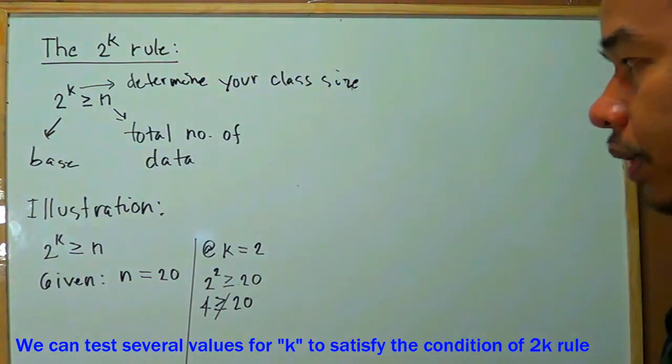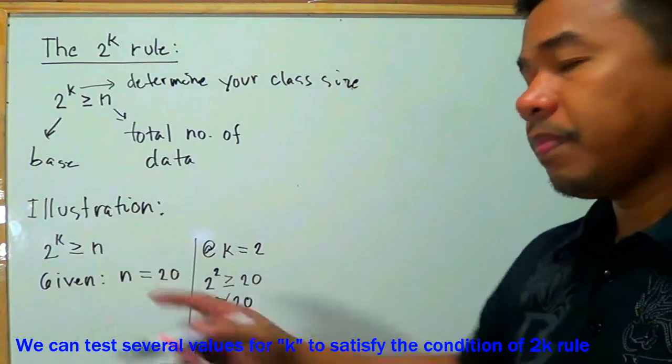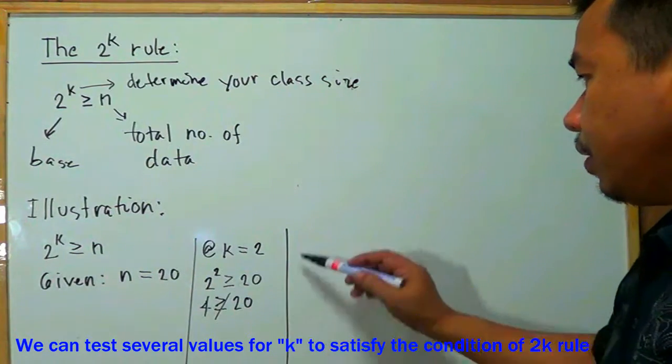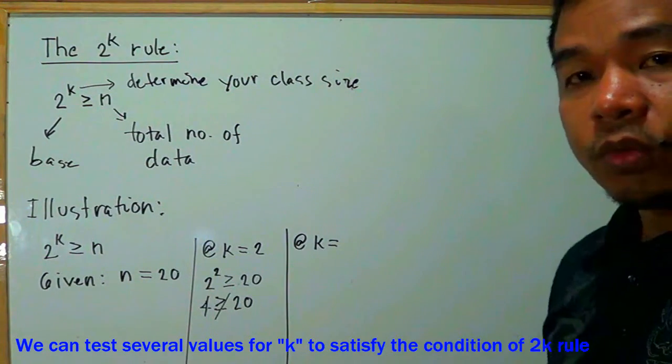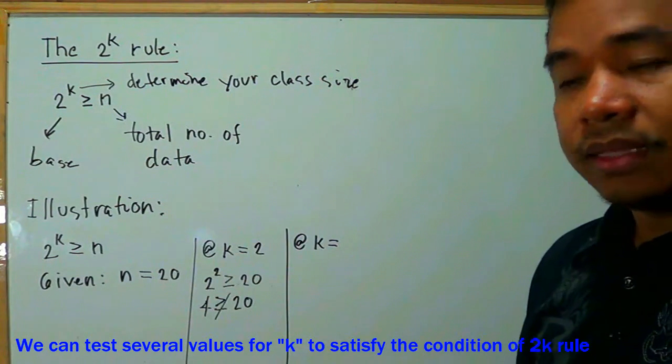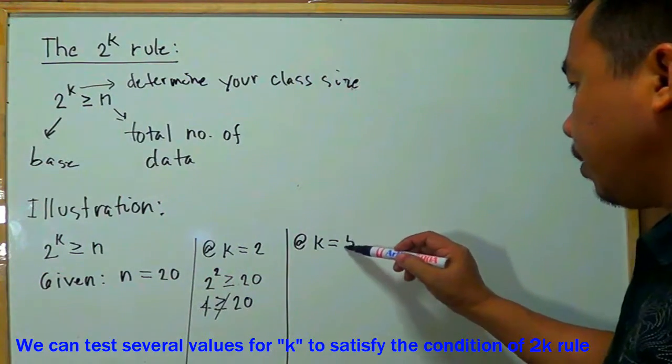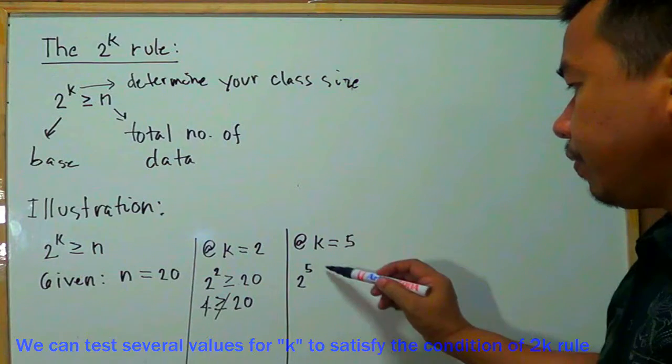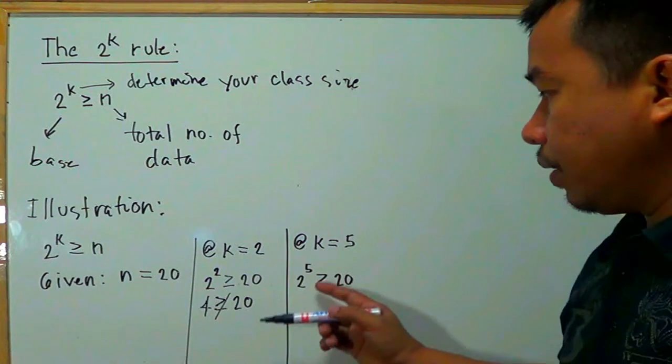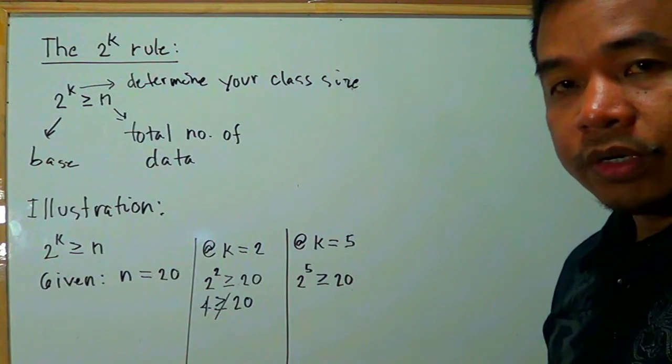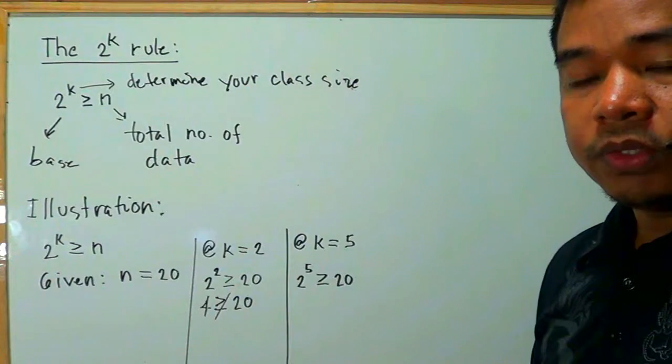Let's think of a number that when applying to this condition satisfies that general condition. Let's check when k is equal to, when our k is equal to 4, 2 raised to 4 is 16. Still cannot satisfy that condition. How about 5? Let's say k is 5, so this is 2 raised to 5. This is greater than or equal to 20. When base 2 is multiplied 5 times by itself, 2 times 2 is 4, times 2 is 8, times 2 is 16, then another 2 gives us 32.